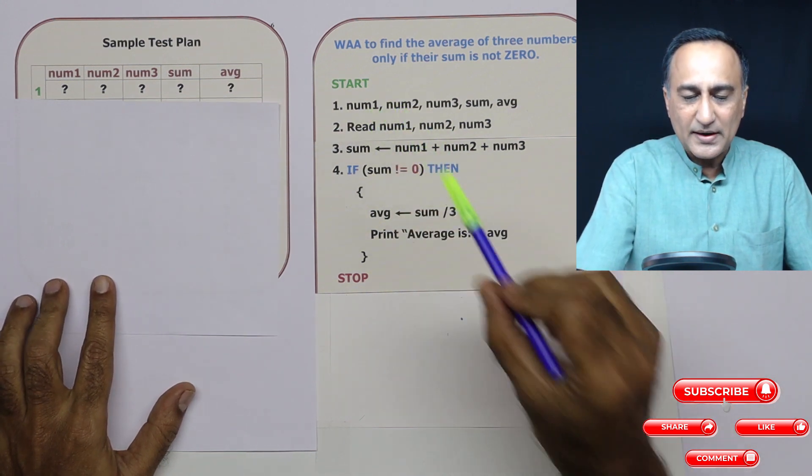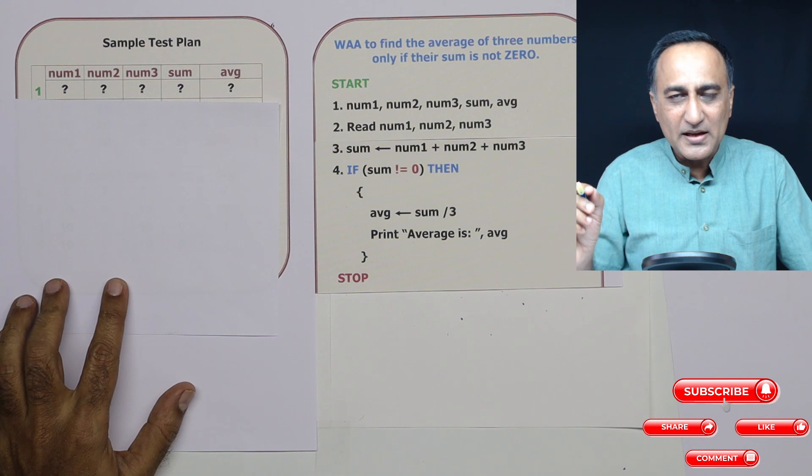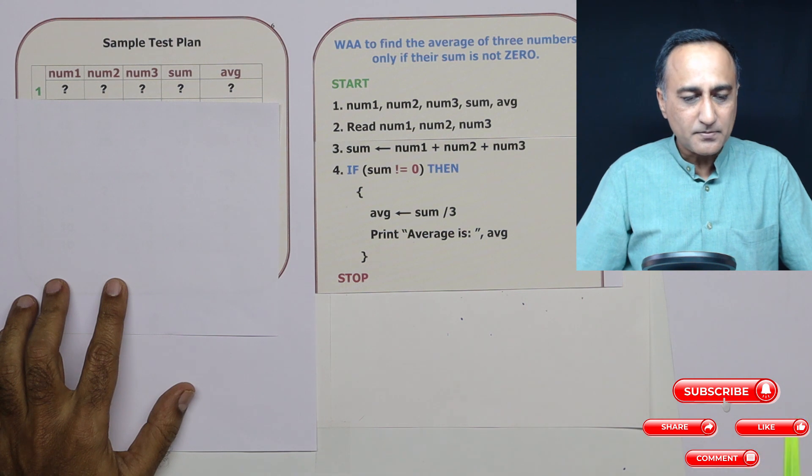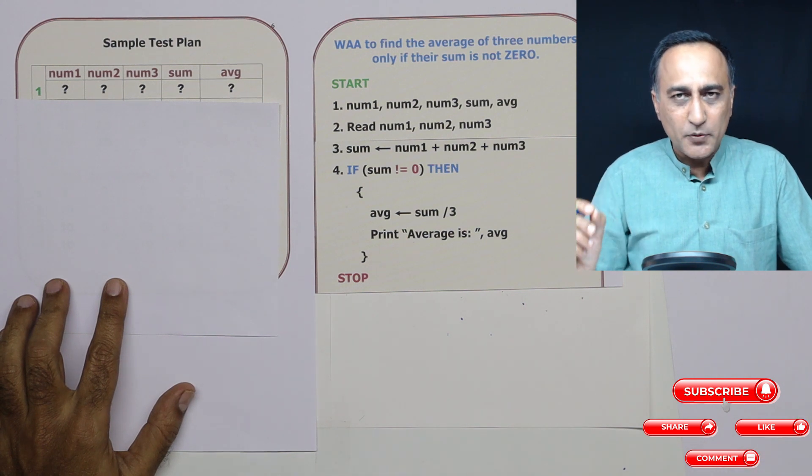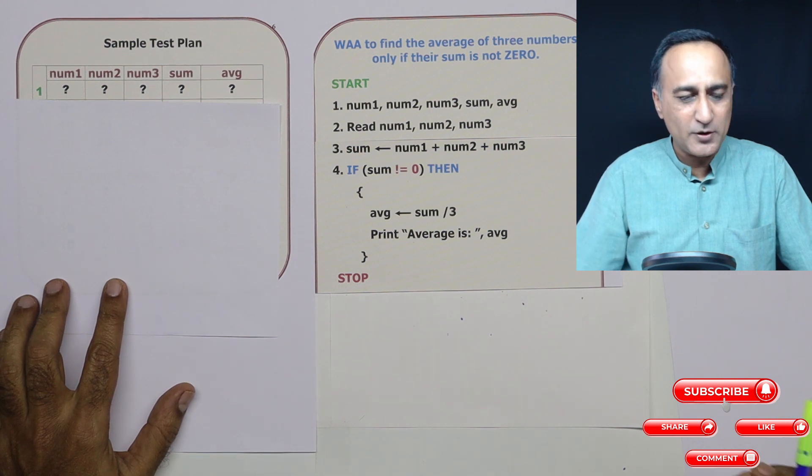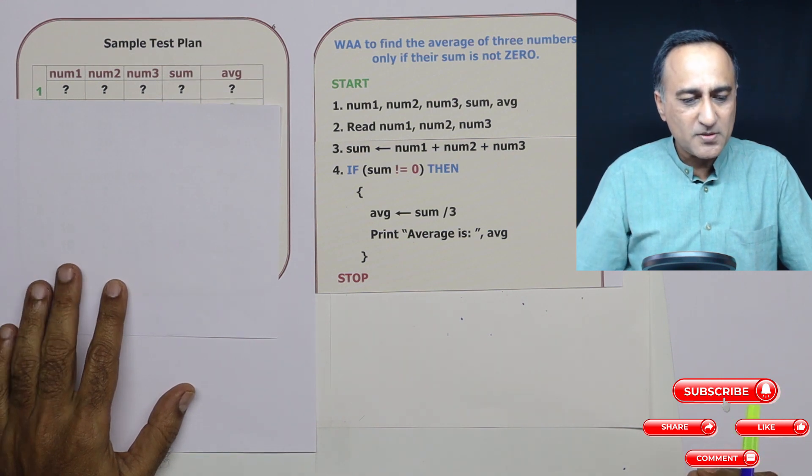In step number one, I have not given them any value, because these values are going to be calculated later on. That's why the computer is going to assign to those memory locations some garbage or random values. So that's why they're all question marks.